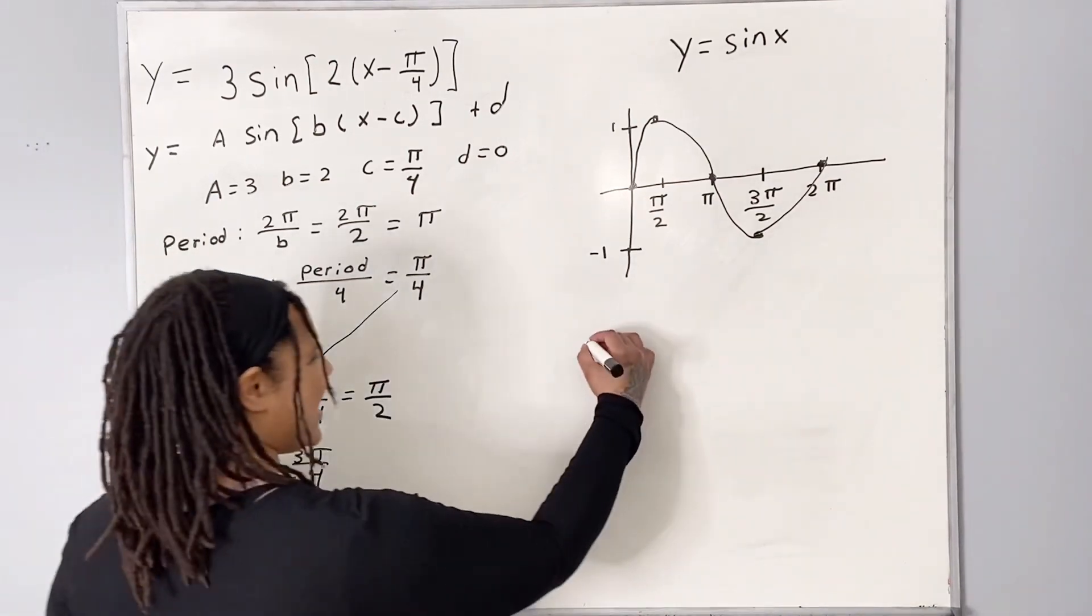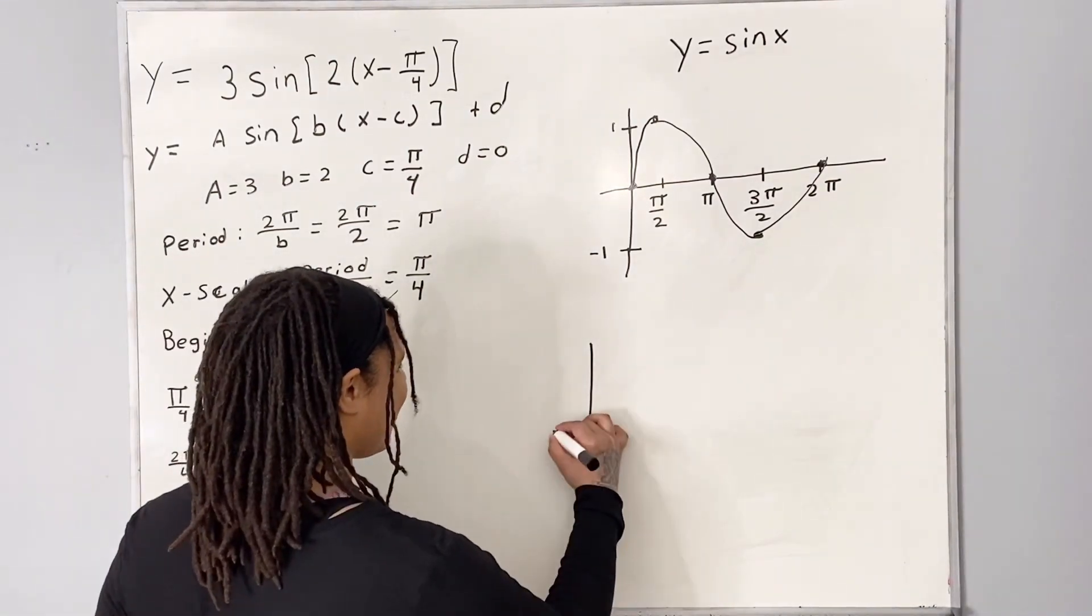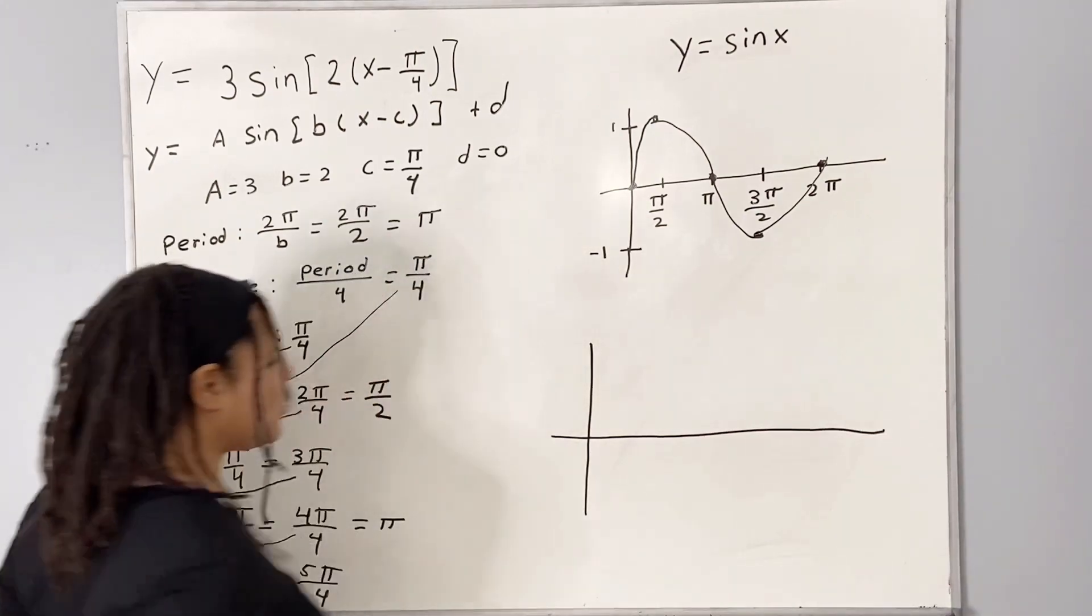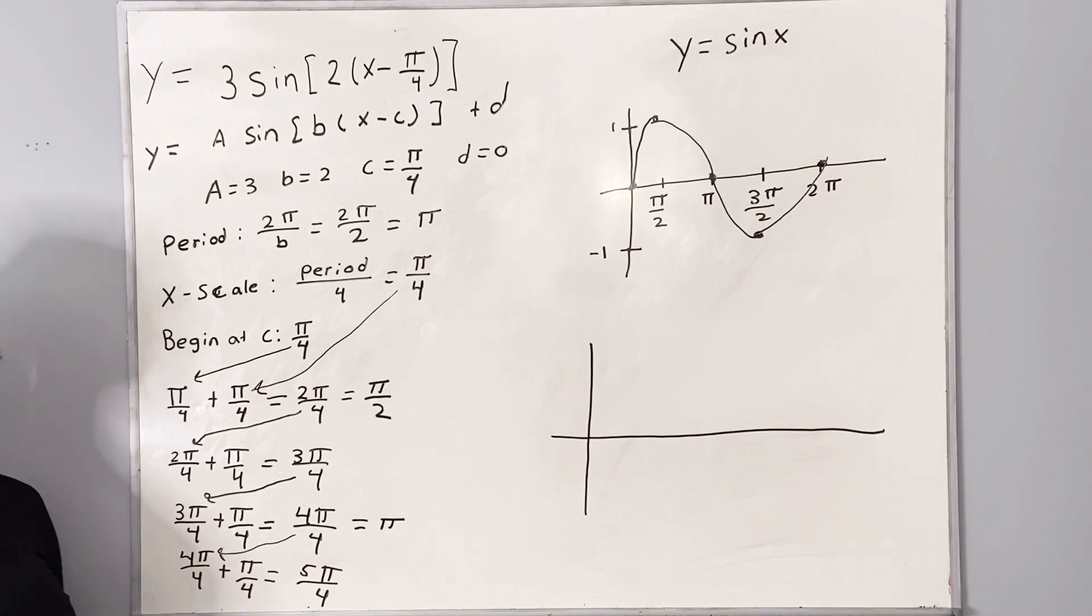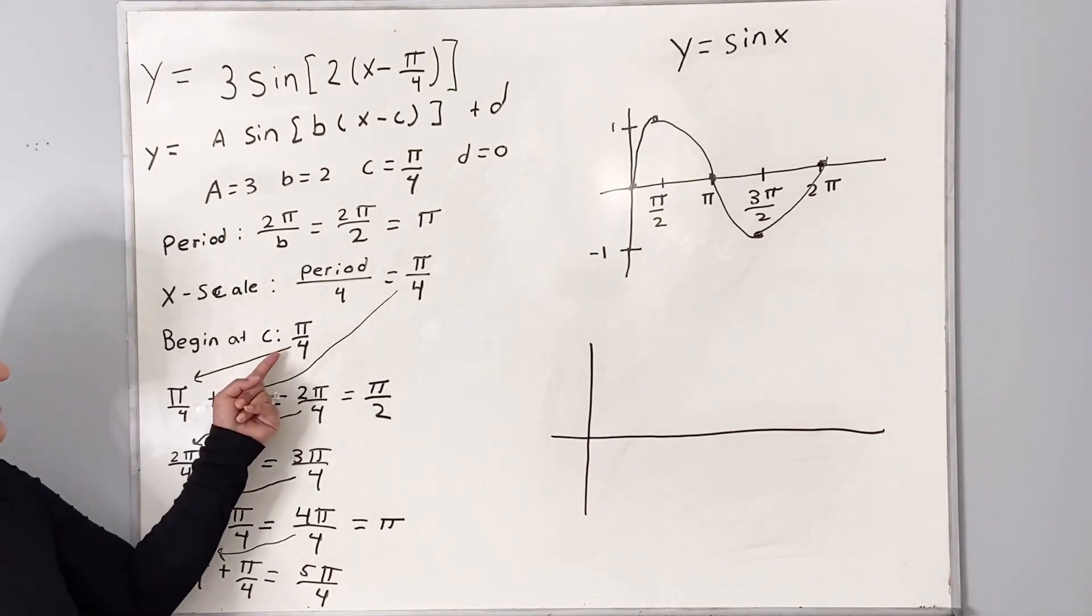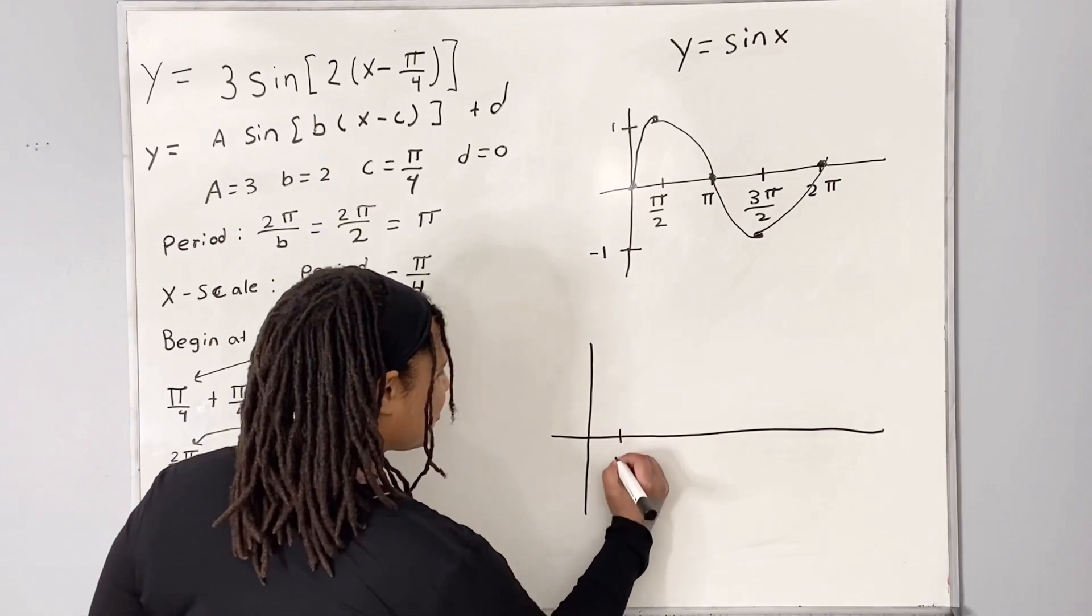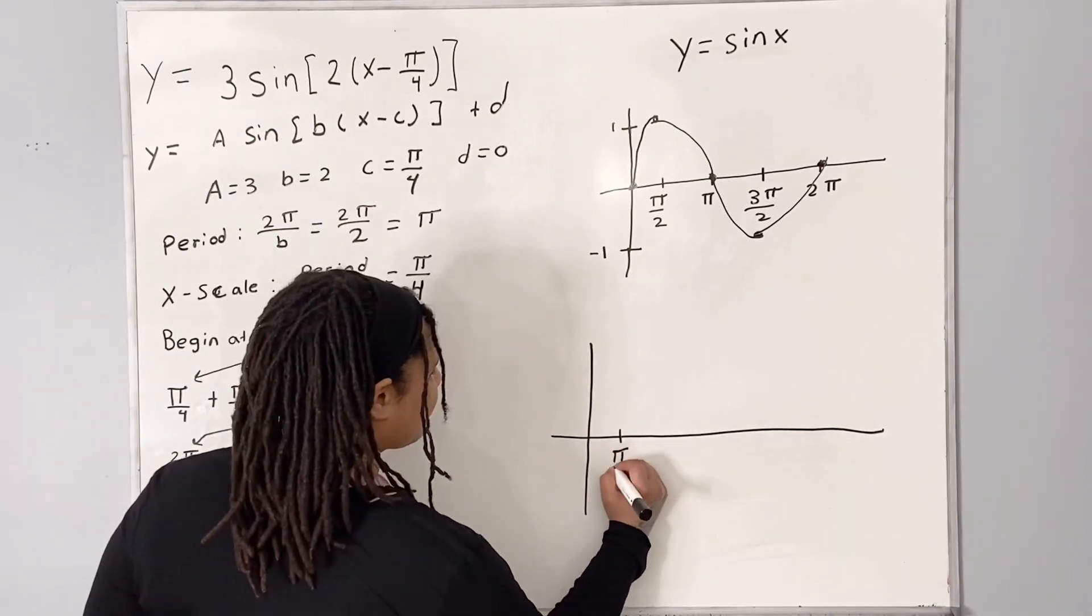So now we can go ahead and draw our new graph. And I'm going to put my x scale on the graph, starting at c. So my first increment is pi over 4.